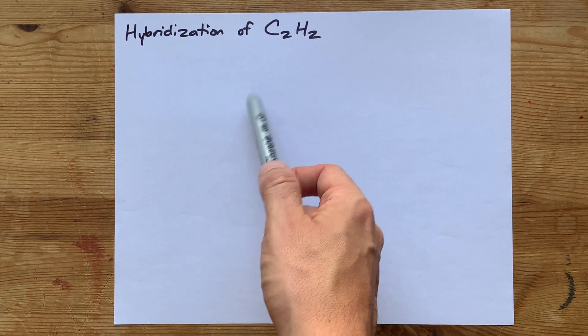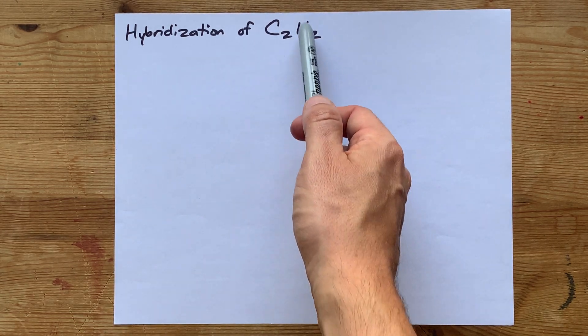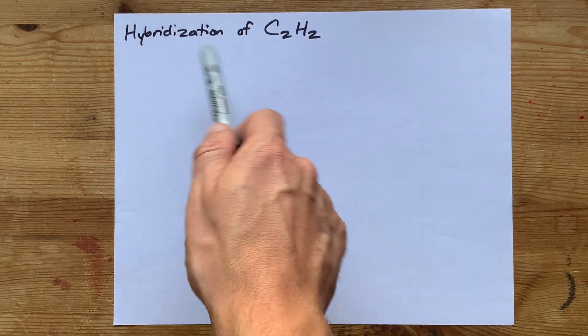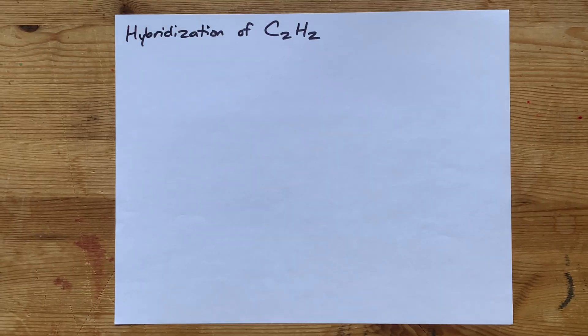What's the hybridization of C2H2? Well, hydrogen doesn't hybridize, but carbon does. So you're being asked for the hybridization of those carbon atoms.